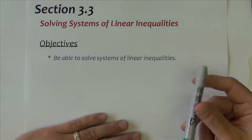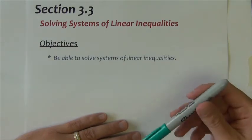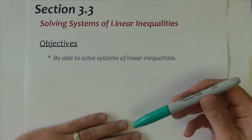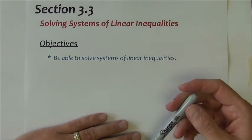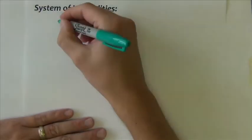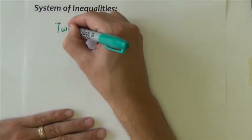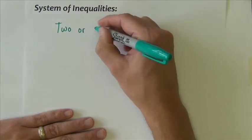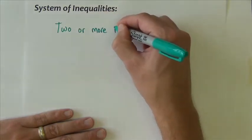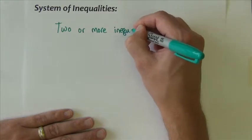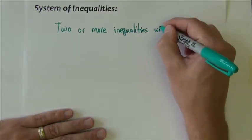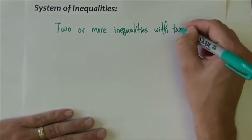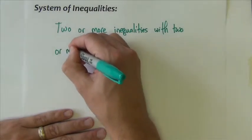Section 3.3 is titled Solving Systems of Linear Inequalities. In this section we're going to look at how to solve these systems with a graphical technique. A system of inequalities, similar to a system of equations, simply is two or more inequalities with two or more variables.